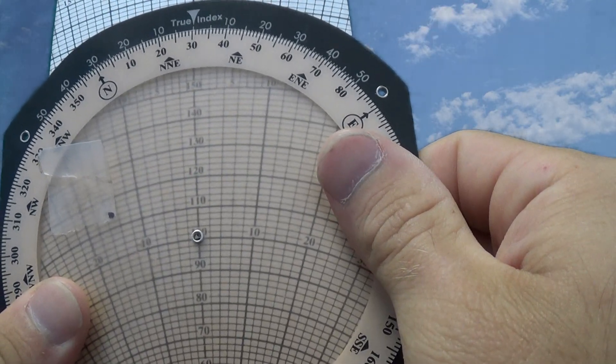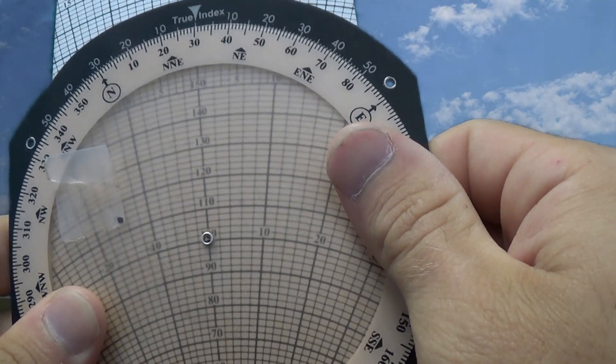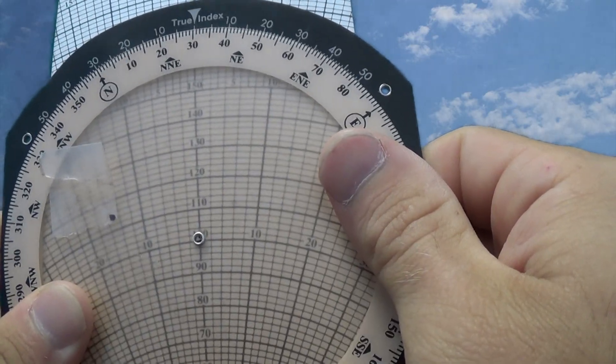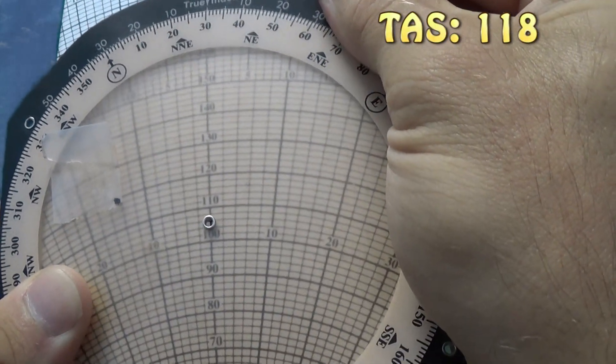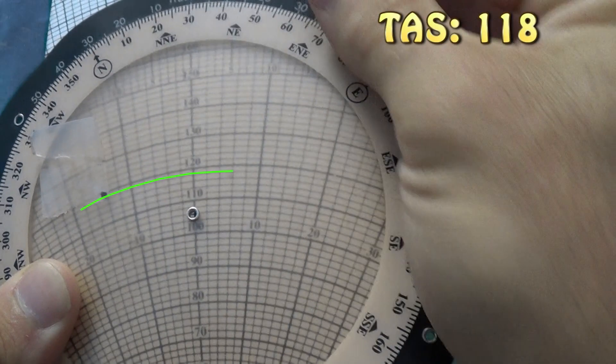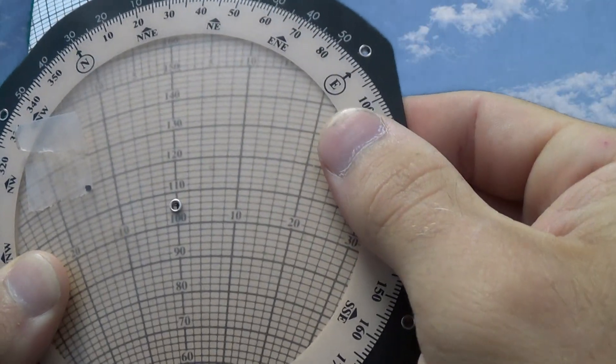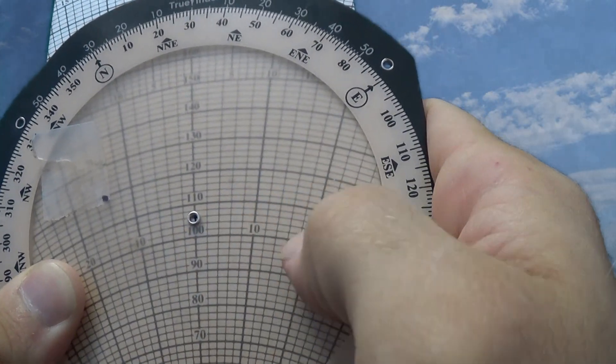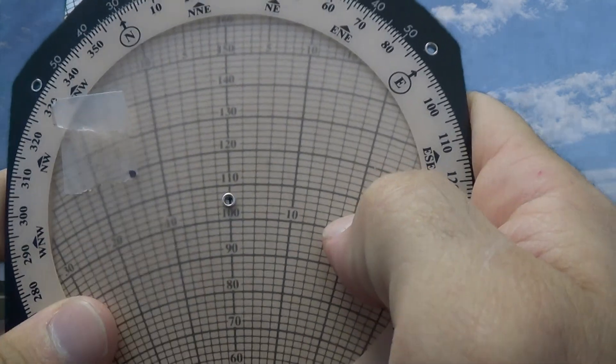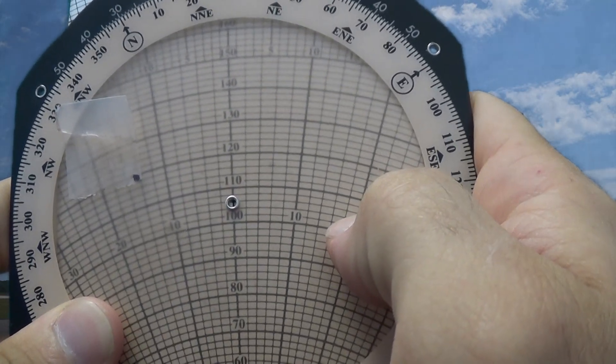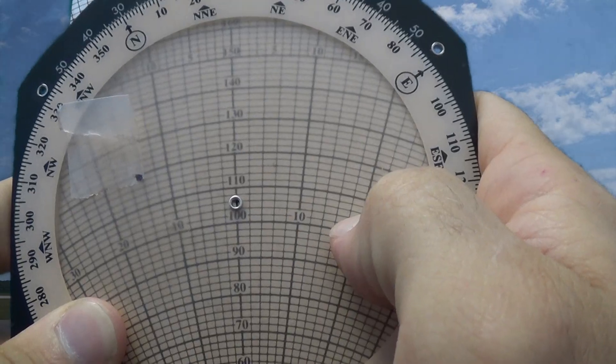So 030 is our true course, and our true airspeed that we calculated from our cruise performance charts was 118, so we're going to move our little dot on up there to 118. And we're going to read that our ground speed will be about 105 knots, so now we can use our ground speed with our distance to find our estimated time and route, and our fuel burn.